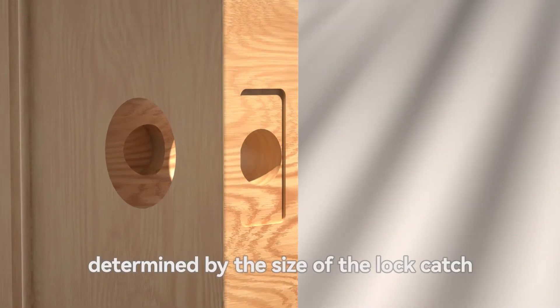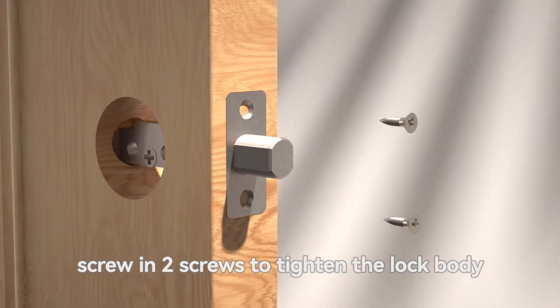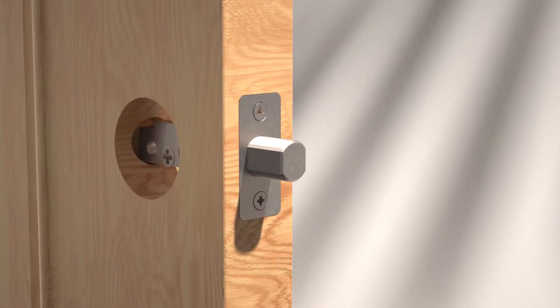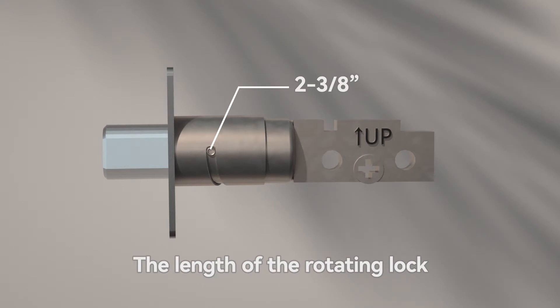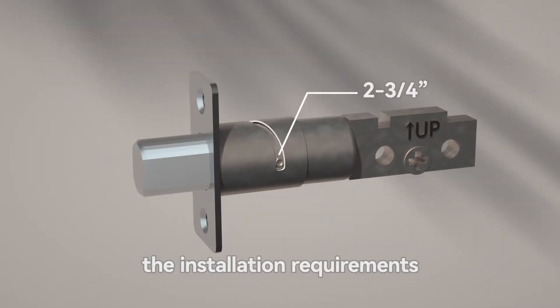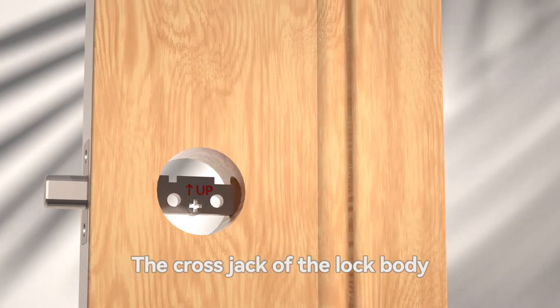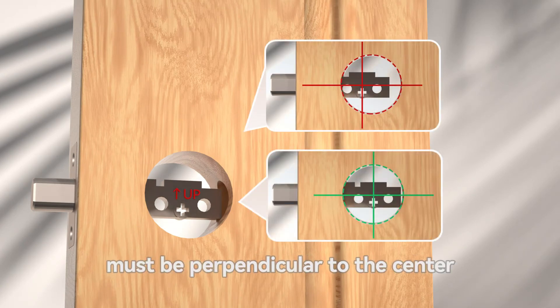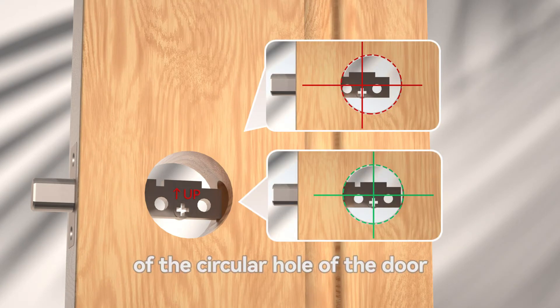The size of counterbore is determined by the size of the lock catch. After loading the lock body, you should screw in two screws to tighten the lock body. The length of the rotating lock can be adjusted to suit the installation requirements. The cross jack of the lock body must be perpendicular to the center of the circular hole of the door.